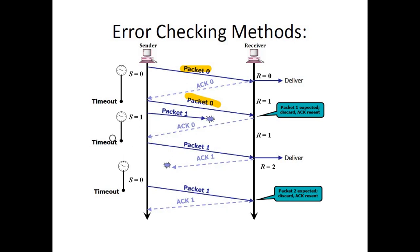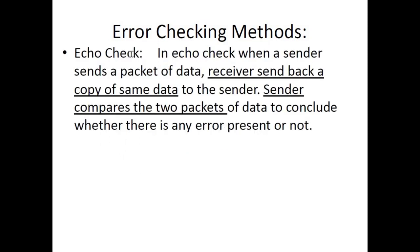This time the sender receives the acknowledgement within time, so it sends the next packet, which is delivered and the next acknowledgement is sent. If by any chance the acknowledgement is lost during transmission, the same packet is resent unless and until the sender receives an acknowledgement for that packet.